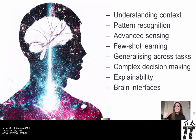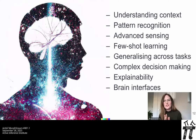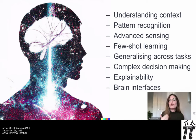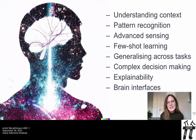Potential applications of neuromorphic computing include understanding of context, pattern recognition, advanced sensing, few-shot learning, generalizing across tasks, complex decision making, explainability, and brain interfaces — skills beneficial for human-centered, real-time applications in dynamic environments like self-driving cars. Neuromorphic systems are also likely to be the future substrate of brain-computer interfaces — they're low energy, real-time, and have architectures which match our own hardware.